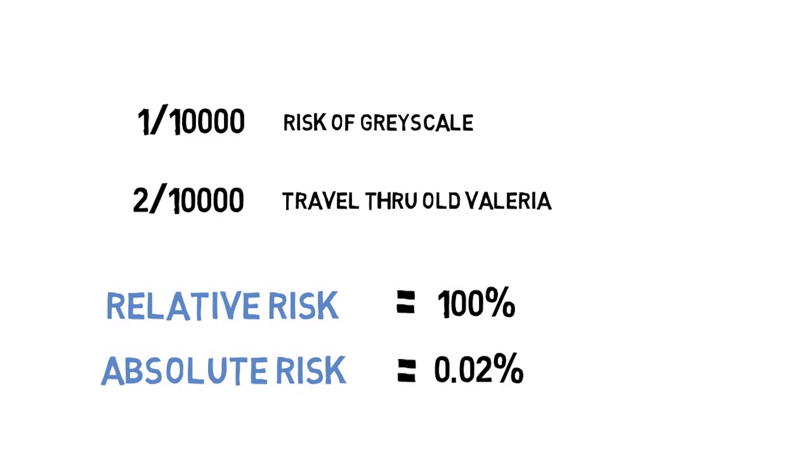However, the absolute risk only increases to 2 out of 10,000, or 0.02%. Therefore, doubling of risk, or the relative risk in this case, can be used to exaggerate the effects of both the developing of grayscale and the environmental risk factors. You can easily be misled if it's not made clear which type of risk you are dealing with.